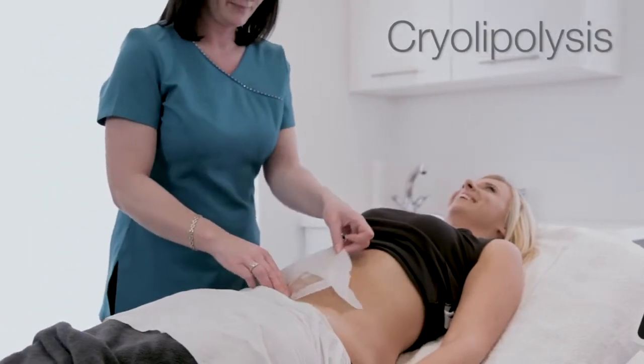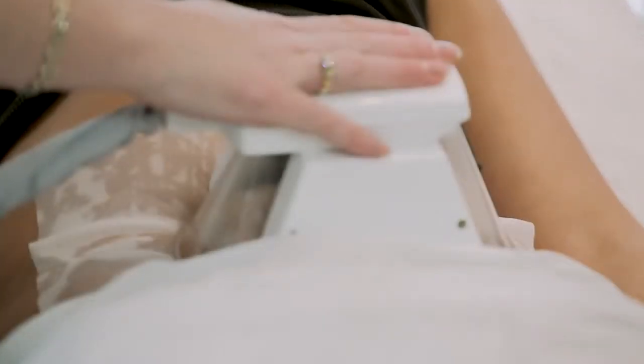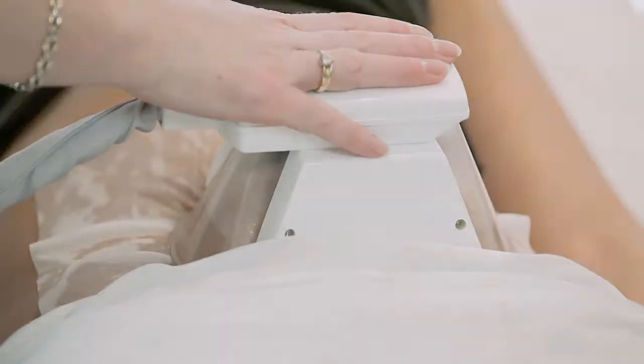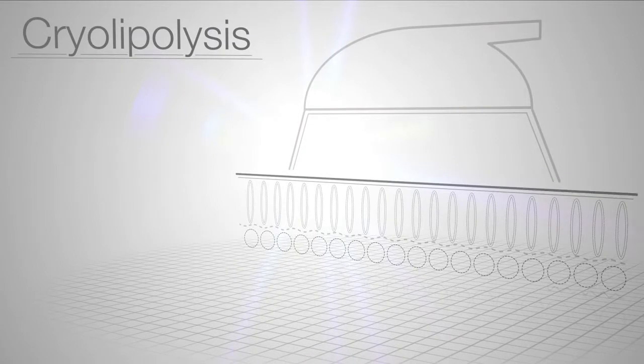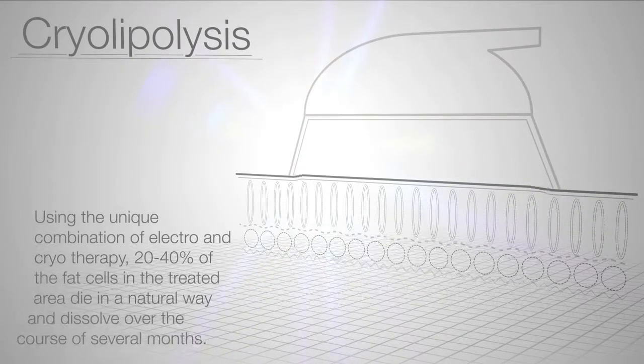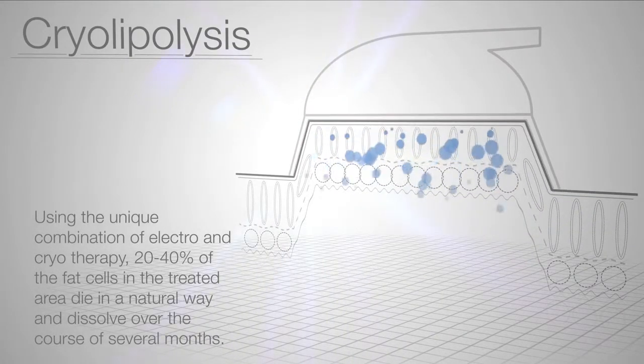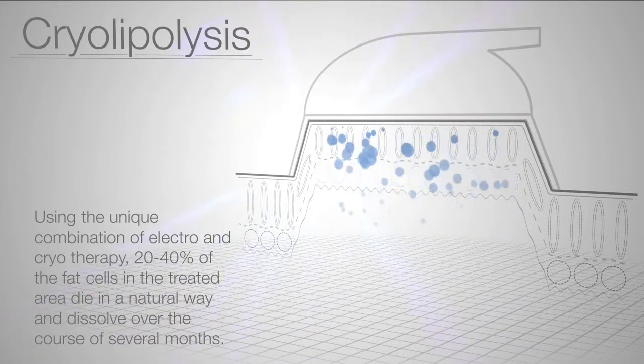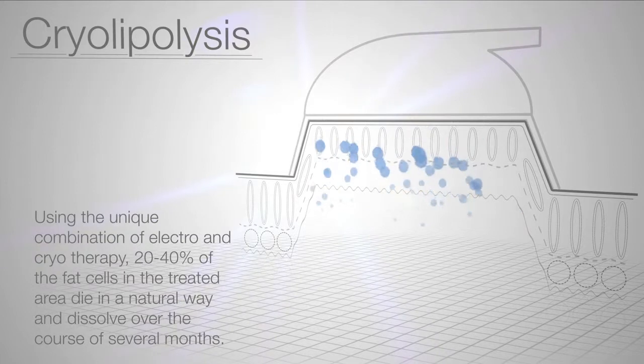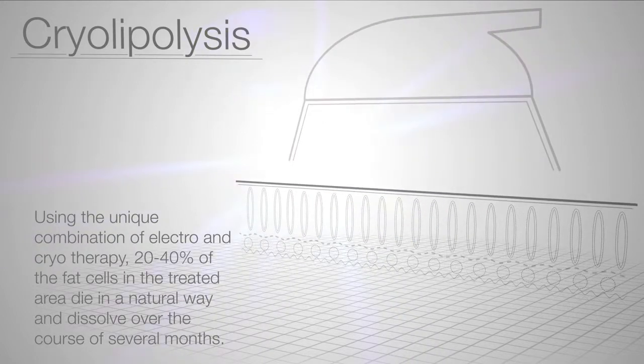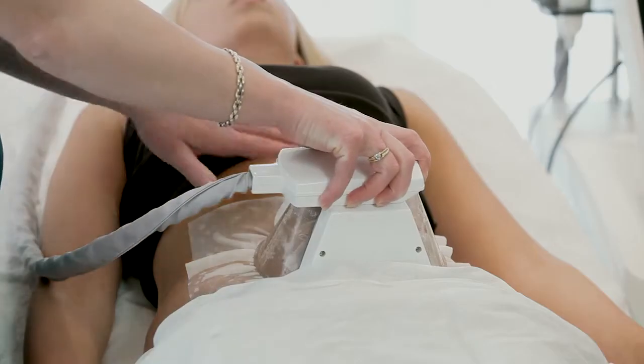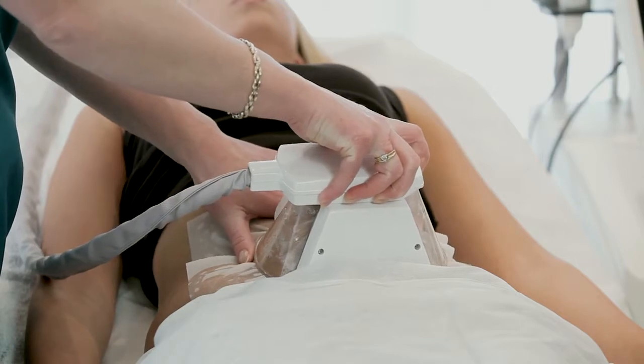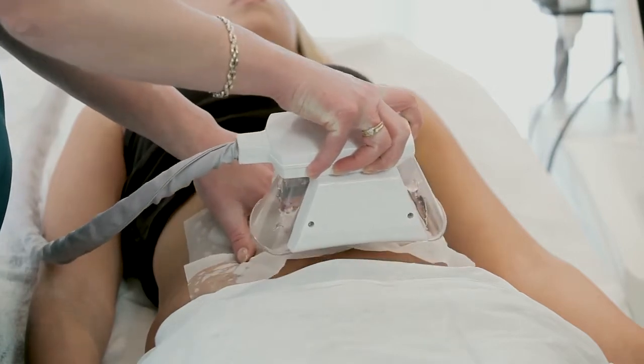Cryolipolysis, like cavitation, targets specifically the fat cells. By lowering the temperature to minus 6 degrees, it pinpoints the content of the fat cell and causes a crystallization. No other structures are affected by this process and, like cavitation, the remaining content is disposed of naturally through the body. Cryolipolysis delivers desired results within two months.